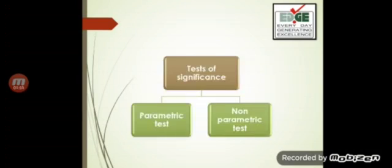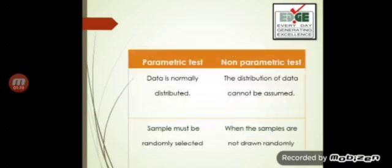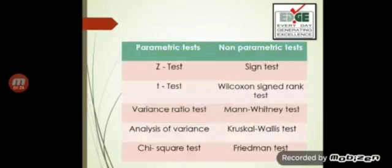These tests are basically classified as parametric and non-parametric tests. Parametric tests are done when the data is normally distributed and the sample must be randomly selected. Non-parametric tests are used when the distribution of data cannot be assumed to be normal and when the samples are not randomly selected.